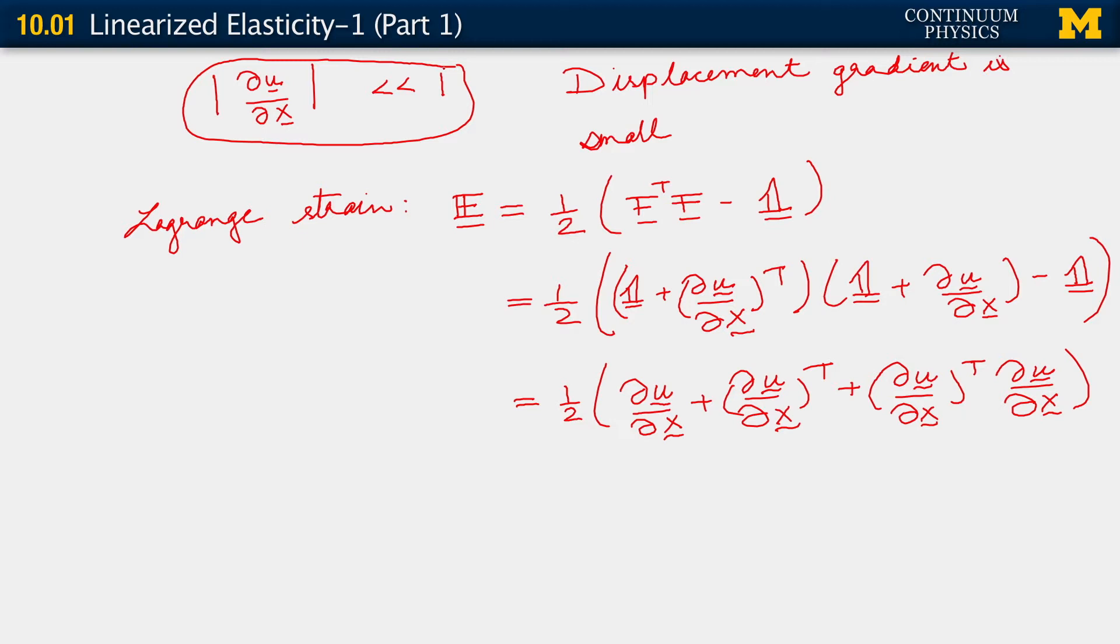If the Euclidean norm of the displacement gradient and really any other norm that we care to compute is small, by which we mean very much less than one, what this means is that relative to the first order terms, the second order terms are really much smaller. What we're saying is that these terms are even smaller than the norm of the displacement gradient. So in comparison with the first order terms, it's all right to neglect them.